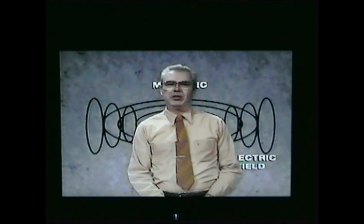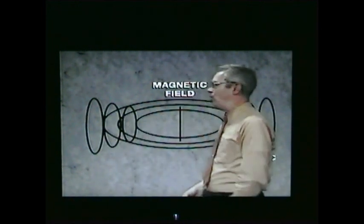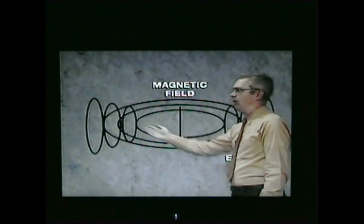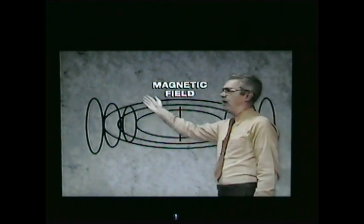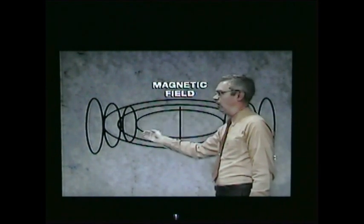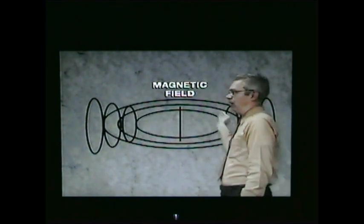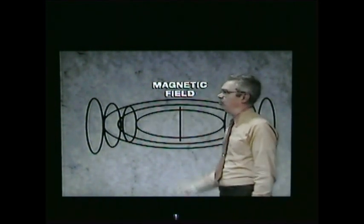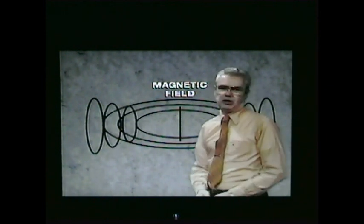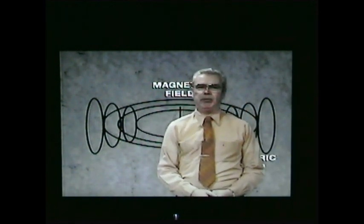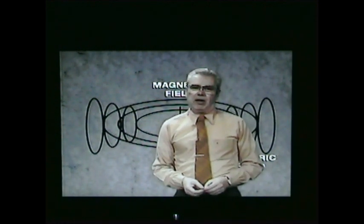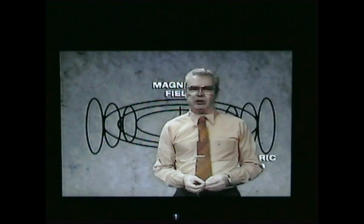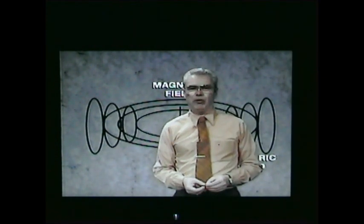Maxwell's equations say that if the magnetic field is made to change very rapidly, it will produce an electric field at right angles to the magnetic field, all around the magnetic field, something like this. This electric field is also varying rapidly because of the varying magnetic field that produced it. This electric field just exists in space, and since space has no free electrons, there's no current that flows anywhere.